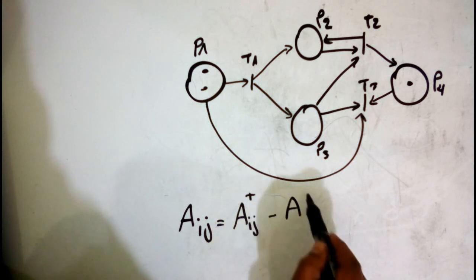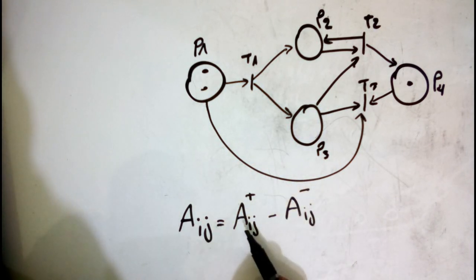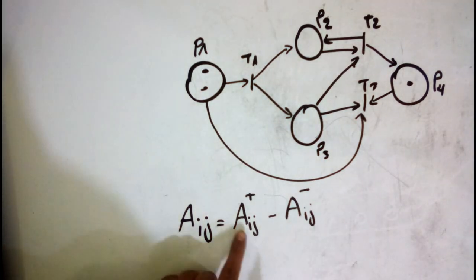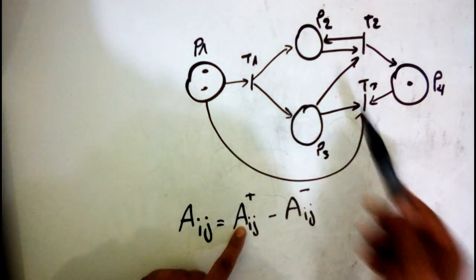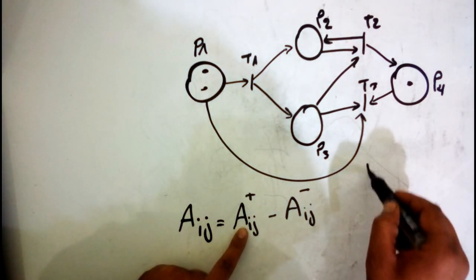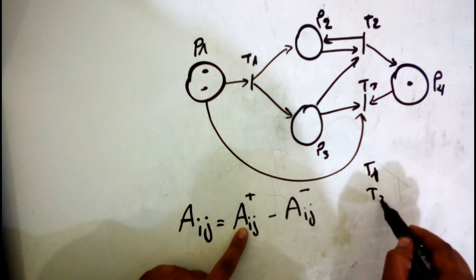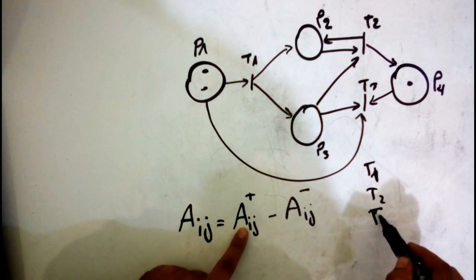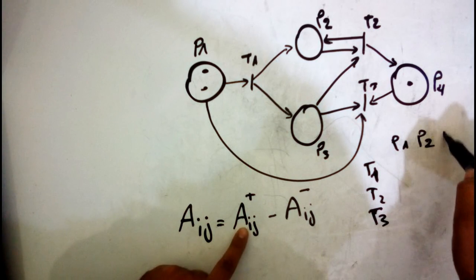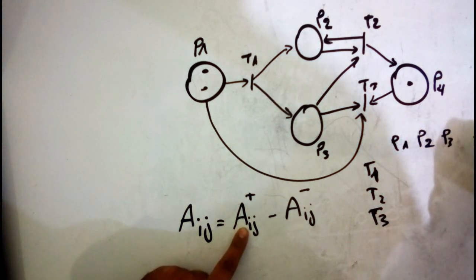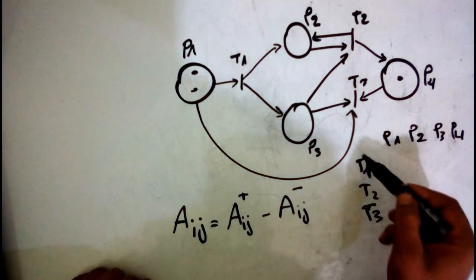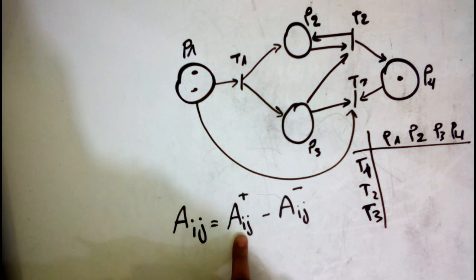This matrix equals the matrix of the output minus the matrix of the input. I will explain what the matrix of the input and the matrix of the output mean. In our example we have three transitions: t1, t2, and t3, and the places are p1, p2, p3, and p4.